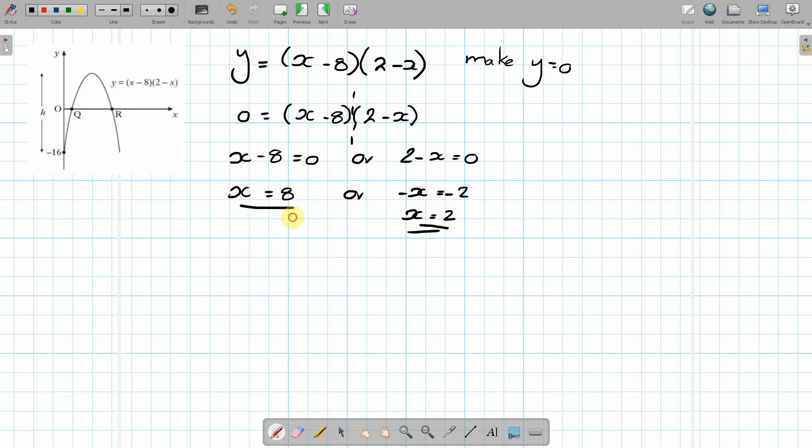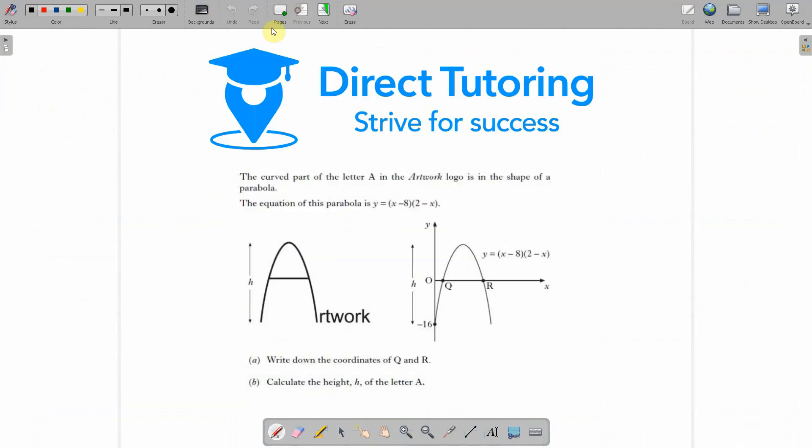Now the question explicitly asks for the coordinates of Q and R. So you must write what the coordinates are. So Q is first, so Q must be the 2. So it must be (2, 0). And the coordinates of R must be (8, 0). So that's part A answered.